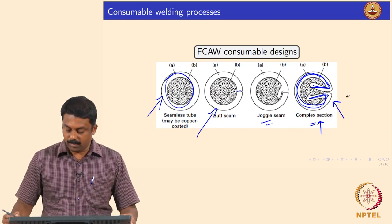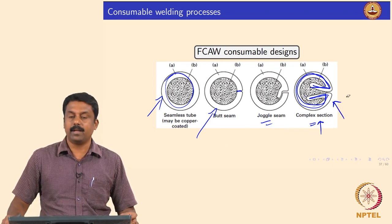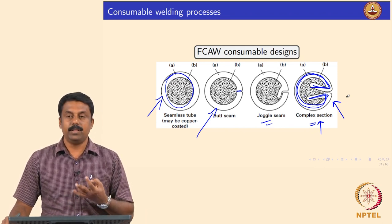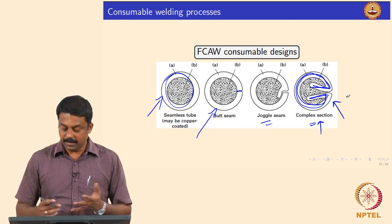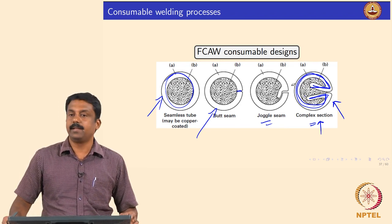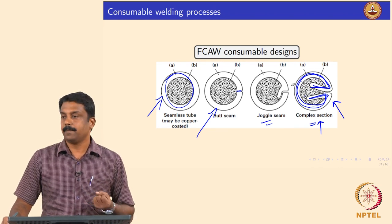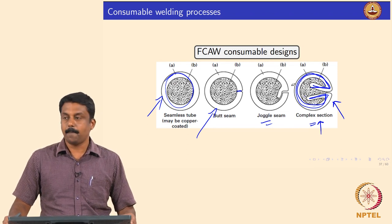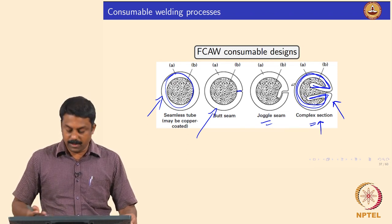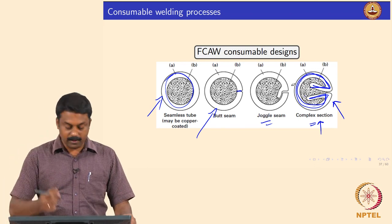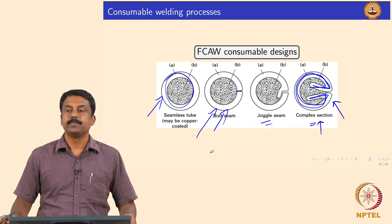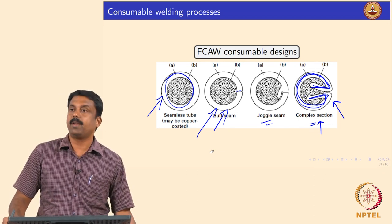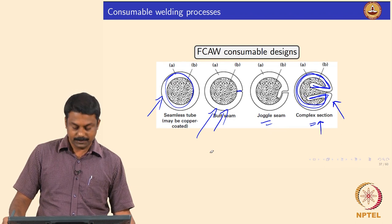Such complex section geometry is used in conjunction with shielding gas. In most cases, self-shielded FCAW uses a seamless tube or butt-seamed electrode design. For a complex section or joggle-seam FCAW consumable, you generally need extra shielding because the volume fraction of flux relative to metal decreases significantly, so you need to generate more gas and may have to use external shielding. These are the commonly used designs for FCAW; the circled one is actually a butt-seamed FCAW consumable.